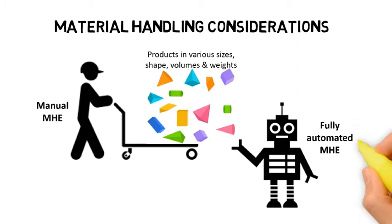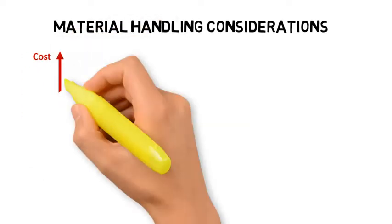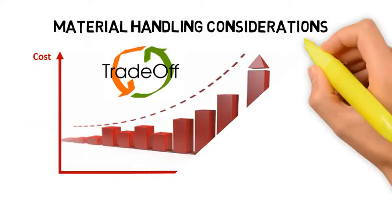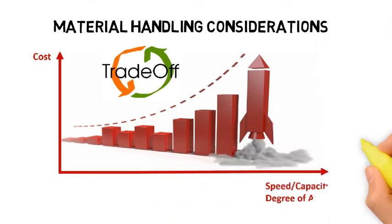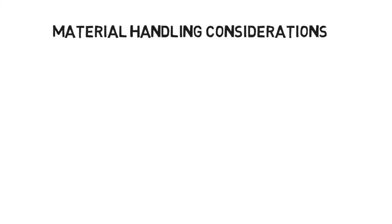Products come in various sizes, shapes, volumes and weights. There are many varieties of material handling equipment available to handle this diversity of products. Just like storage systems, they can be manual, semi-automated or fully automated. Low-cost equipment are usually manual, are slower and can only handle small volumes. High-cost equipment are typically powered and automated, operate at higher speeds and are more efficient.